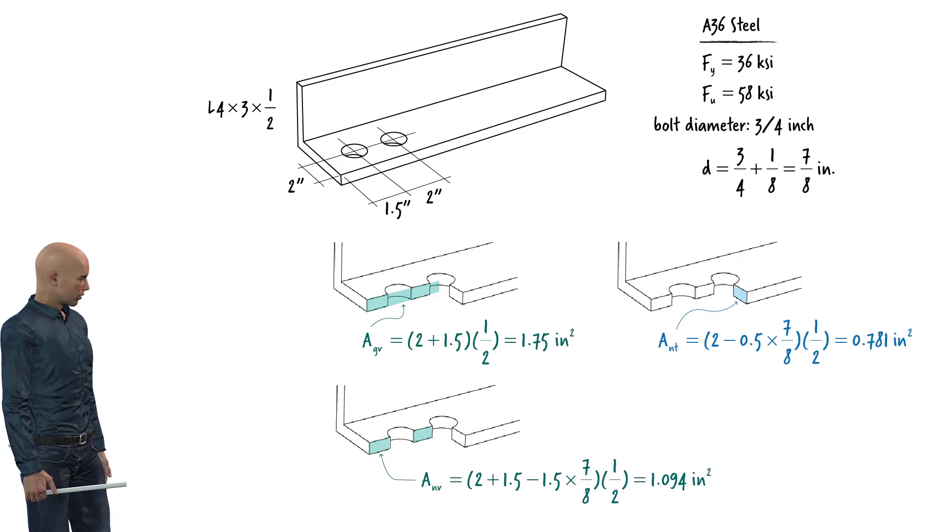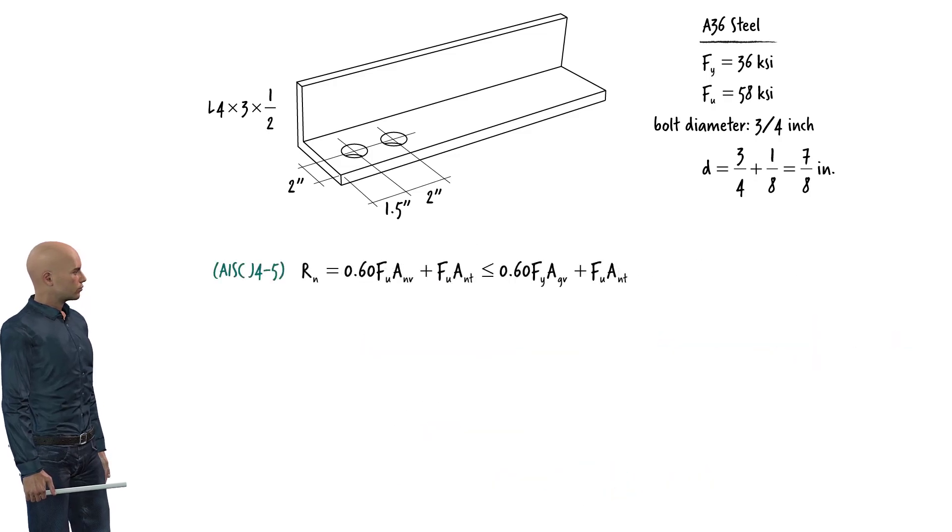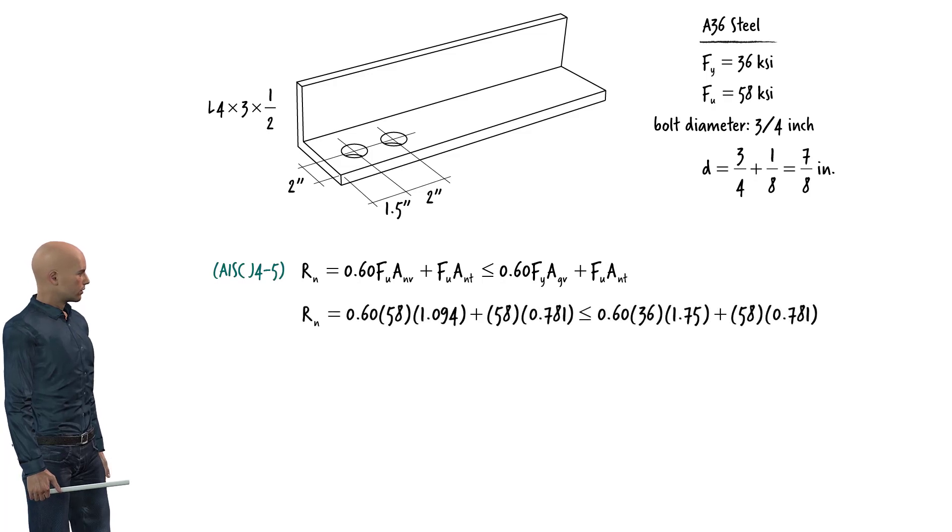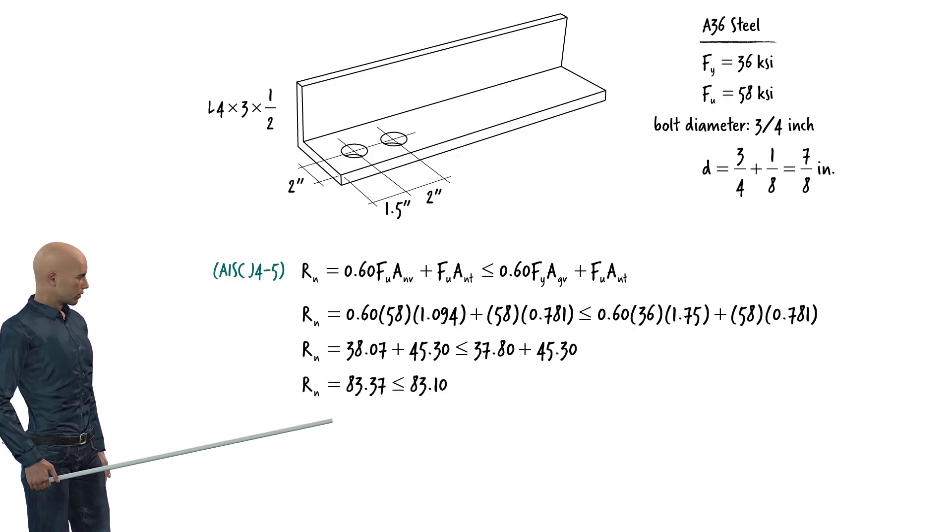According to AISC equation J4-5, nominal block shear strength can be expressed as... This equation simplifies to... The smaller of these two values controls the design.